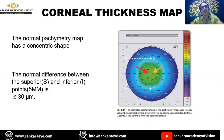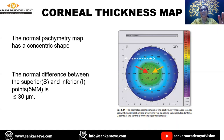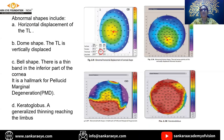Coming to the corneal thickness map - the cornea has a concentric shape, and the normal difference between superior and inferior at the 5 mm zone is less than 30 microns. Central and concentric is normal. Abnormal patterns include: horizontal displacement; a dome-shaped inferior displacement, very typical of keratoconus; an isolated bell shape, typical of PMD; or uniform thinning as seen in cases of keratoconus.